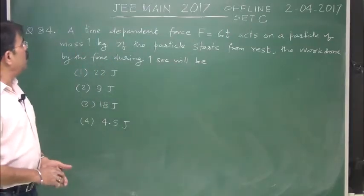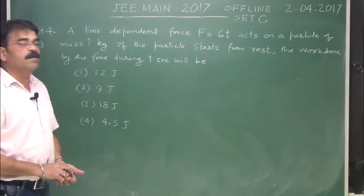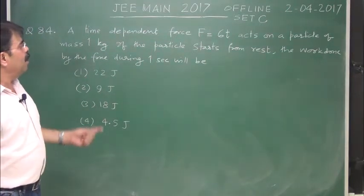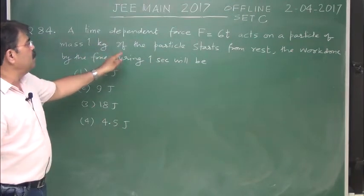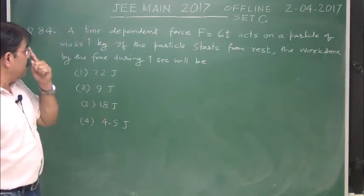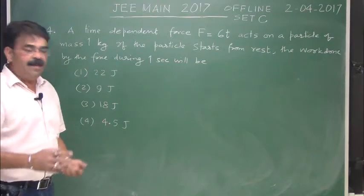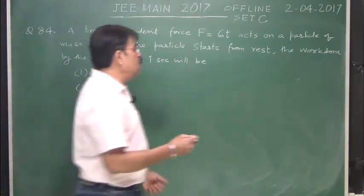Question 84: A time dependent force F equals 6t acts on a particle of mass 1 kg. If the particle starts from rest, the work done by the force during 1 second - work energy theorem solve.